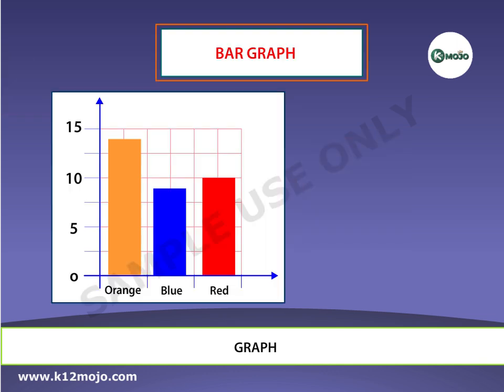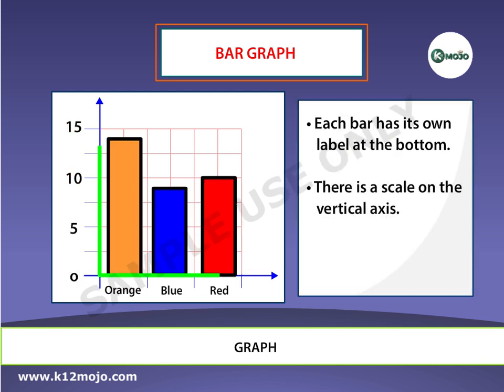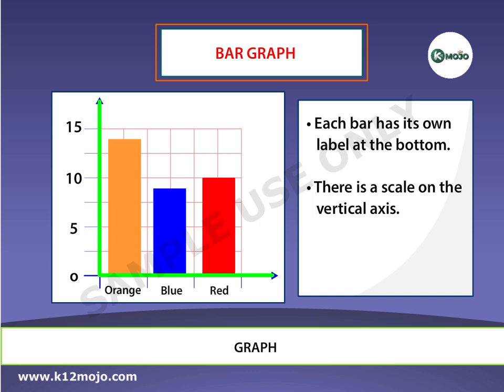This is a bar graph. In a bar graph, each bar has its own label at the bottom. There is a scale on the vertical axis. The bars are of equal width.